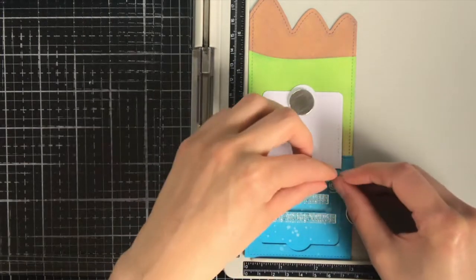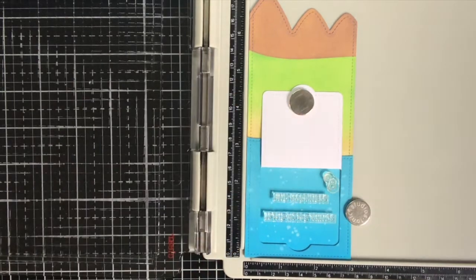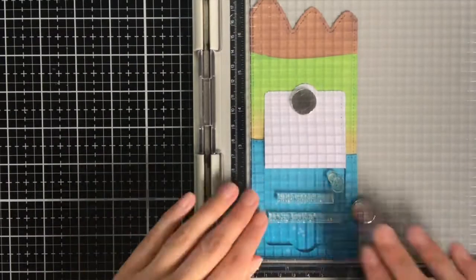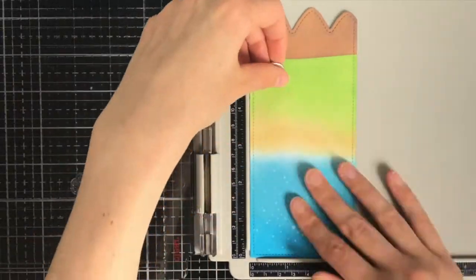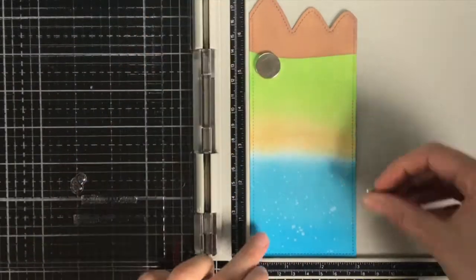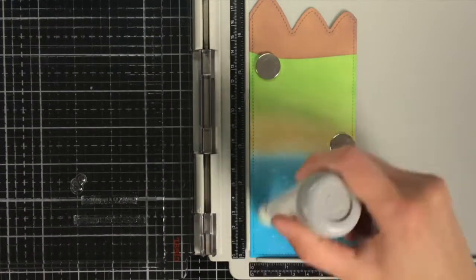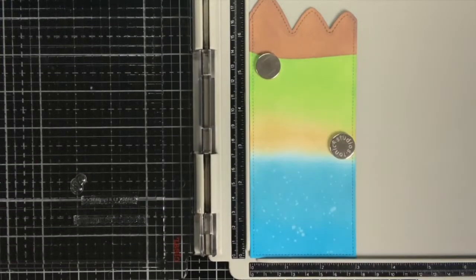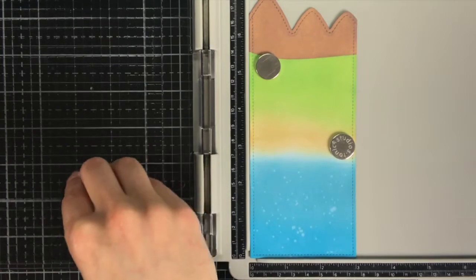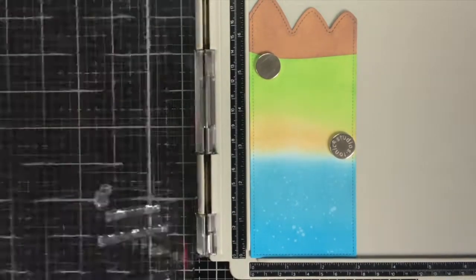I thought it would be cute to have the sentiment hidden under the flap, so I'm going to prepare that now. So the sentiment it is coming from the Hey Lady stamp set, and it reads this, find happiness in the little things. As I wanted to heat emboss the sentiment I'm going to prepare the cardstock first with an anti-static powder tool. And this makes sure that the embossing powder will only stick to the areas on which I stamped the sentiment.